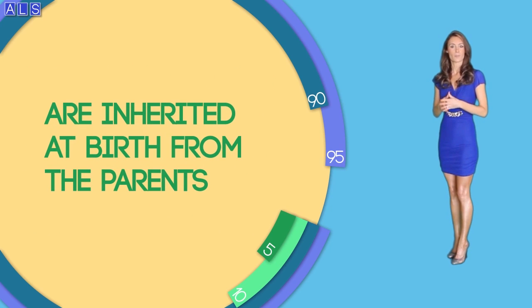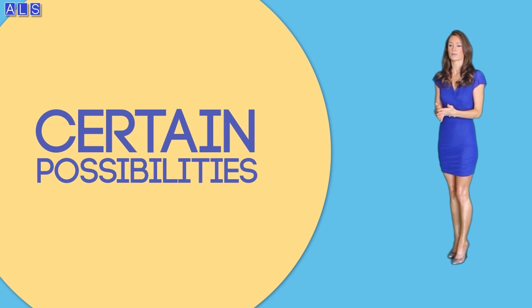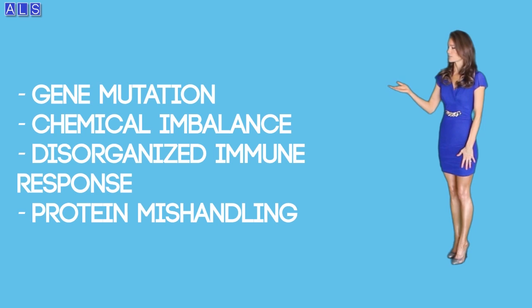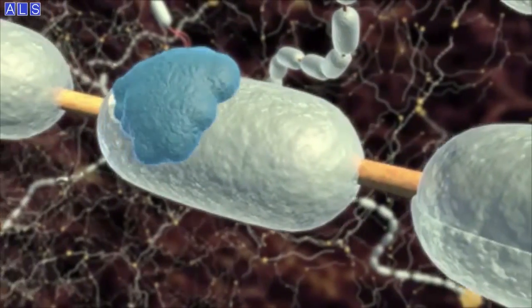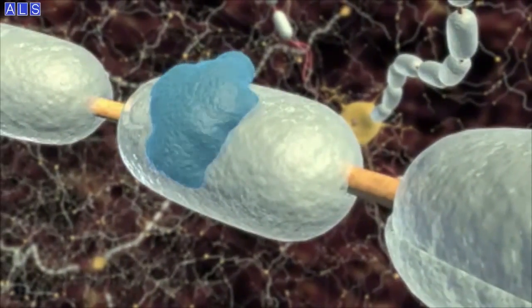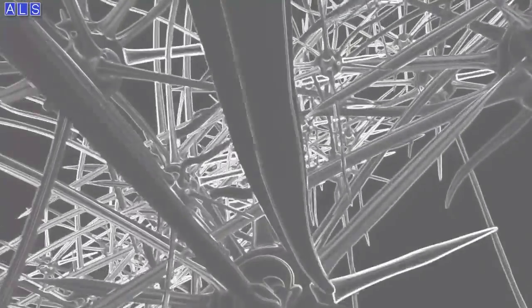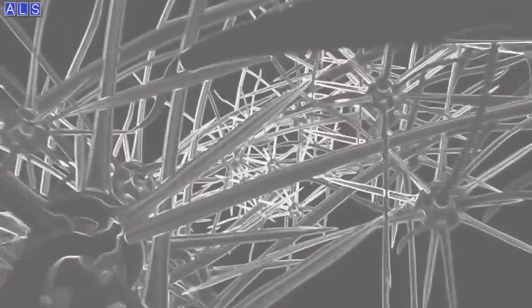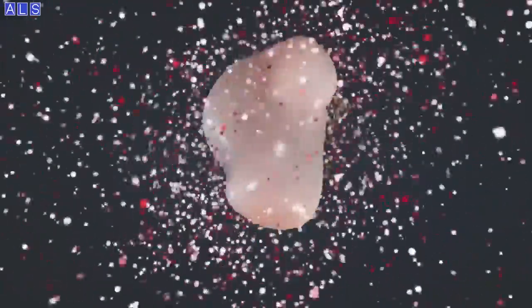About 90 to 95 percent of all ALS cases occur randomly and no apparent associated risk factors have been discovered yet, but about five to ten percent are inherited at birth from the parents. It is still unknown why the motor neurons degenerate in ALS, but researchers have suggested certain possibilities: gene mutation — certain genetic mutations can result in inherited ALS; a chemical imbalance — individuals affected by ALS contain higher levels of glutamate around the nerve cells and spinal fluid. Glutamate is a chemical messenger in the brain, but in excess can be toxic to nerve cells. A disorganized immune response — sometimes a person's immune system attacks its own normal cells, such as nerve cells, eventually killing them. Another suggestion is protein mishandling — sometimes abnormal or mishandled proteins may accumulate in the nerve cells, resulting in the death of those cells.